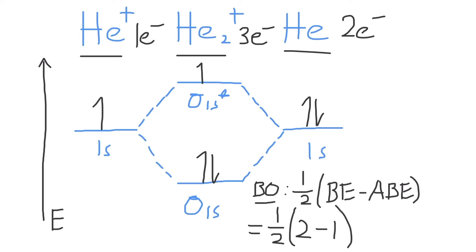And we know that one-half times one is equal to one-half, so the bond order of the He2+ molecule is equal to one-half.